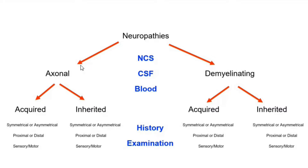Most of the time, if you have a symmetrical and very distal presentation, then you're likely dealing with some sort of axonal neuropathy. All acquired demyelinating neuropathies are more likely to have proximal weakness to start with. So when you're taking history, you can get decent ideas as to whether you're dealing with demyelinating or axonal neuropathies.